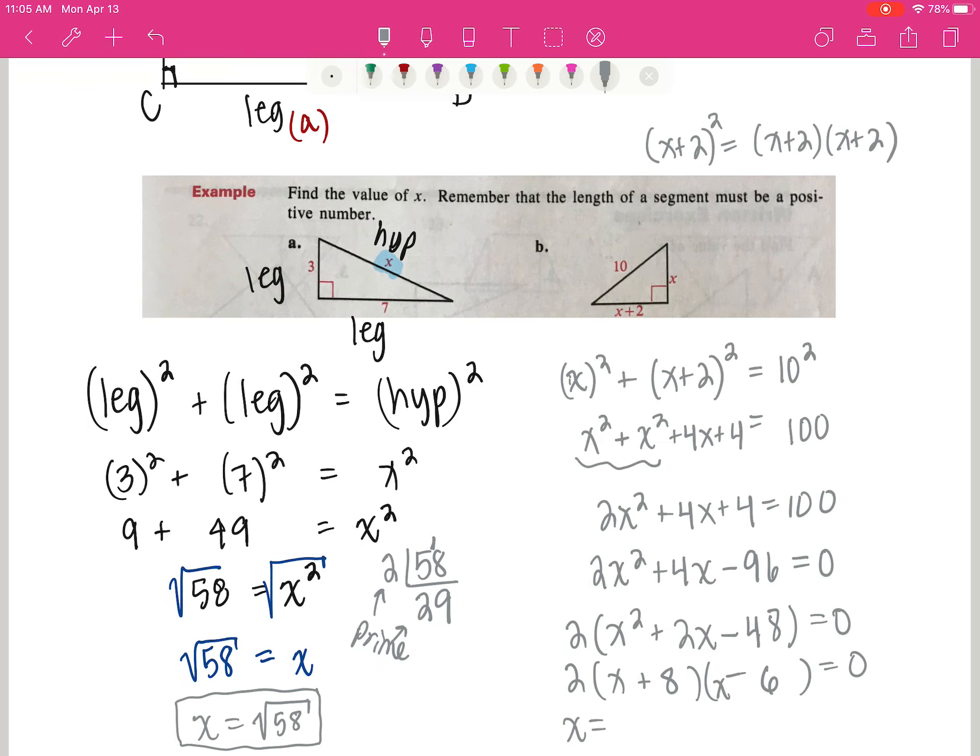So I've got two answers: x equals negative 8 or x equals 6. Well, x can't equal negative 8 because negative 8 can't be a side length. Therefore, the value of x is only 6. That would give me a 6 right here and a 6 plus 2 is 8. And I can check my answer: 6 squared plus 8 squared is 10 squared. And that's a true story. 36 plus 64 is indeed equal to 100. So our answer is x equals 6.